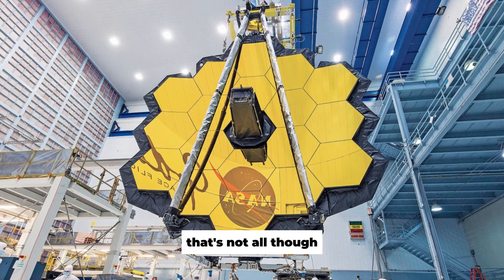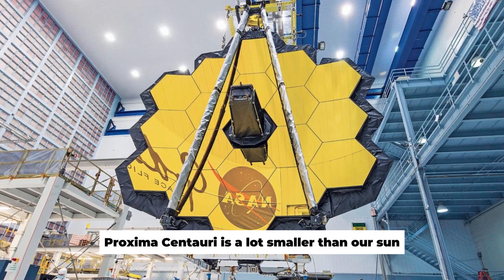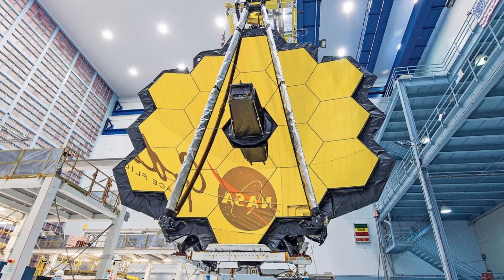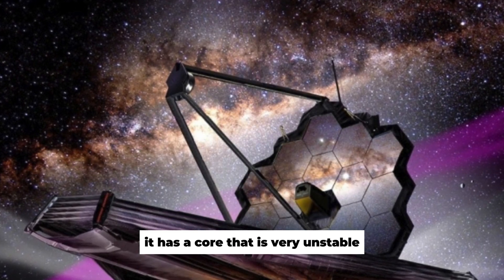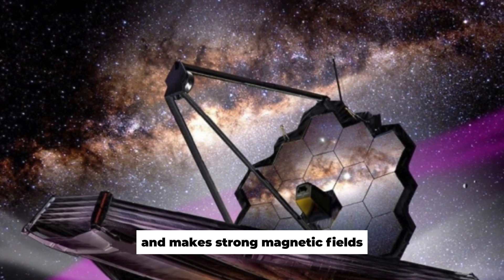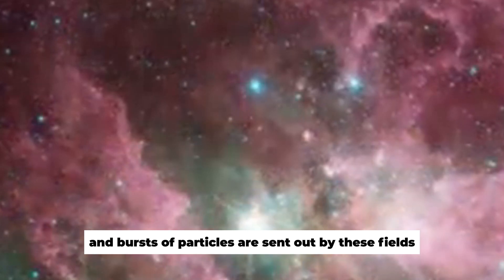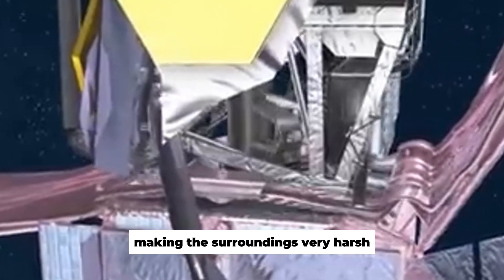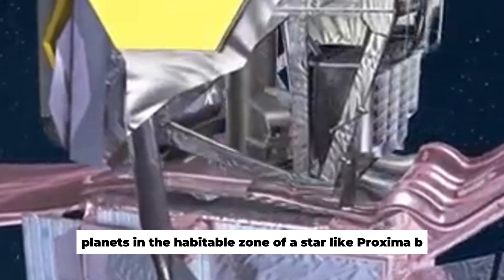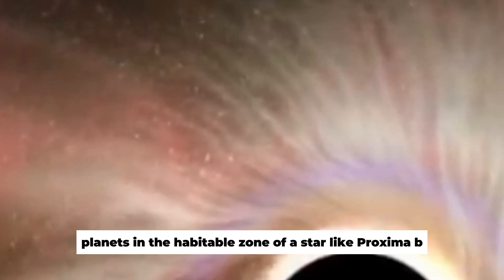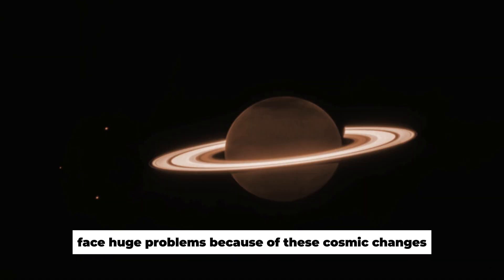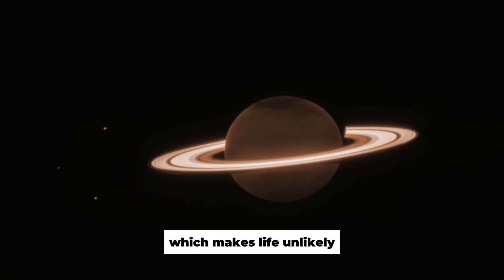That's not all though. Even though Proxima Centauri is a lot smaller than our Sun, it has a core that is very unstable and makes strong magnetic fields. A lot of radiation and bursts of particles are sent out by these fields, making the surroundings very harsh. Planets in the habitable zone of a star like Proxima b face huge problems because of these cosmic changes, which makes life unlikely.